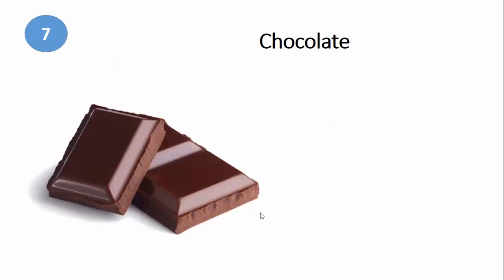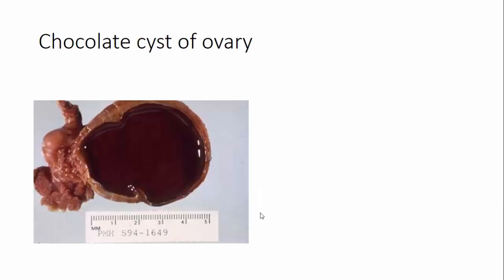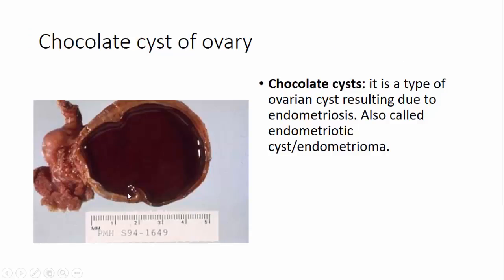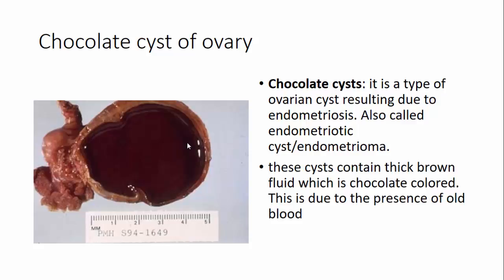The seventh one is chocolate — this is a chocolate cyst of the ovary. Chocolate cysts are a type of ovarian cyst resulting from endometriosis, also referred to as endometriotic cyst or endometrioma. These cysts contain thick, brown-colored, chocolate-colored fluid. The brown color is due to an enormous amount of hemosiderin-laden macrophages, which is again due to the presence of old blood.